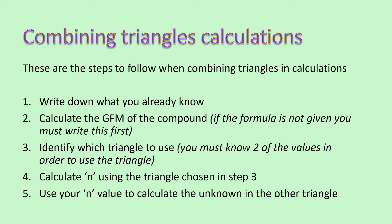So there are five steps to follow: write down what you know; calculate your GFM; identify which triangle to use by looking for the one with two known values; calculate the number of moles; and then use that number of moles to calculate the unknown. That seems like quite a lot of steps, but once you see it in practice it will start to make sense. Pause here and copy down the steps, then we'll look at a few examples.